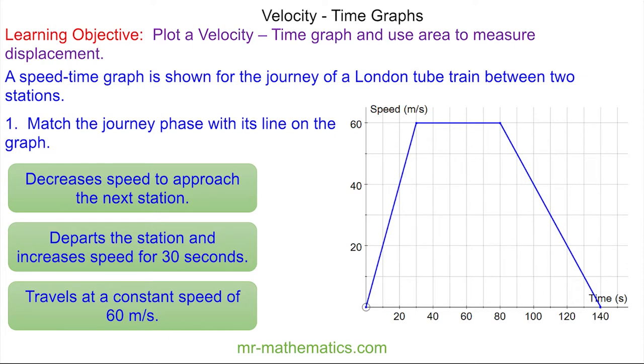To do this I'm going to break the graph up into sections and I'll label each vertex with a letter. For our first section, this decreases speed to approach the next station. You can see between C to D the speed is decreasing from 60 to zero and it does this in a time from 80 to 140, which is 60 seconds. So this part goes here.